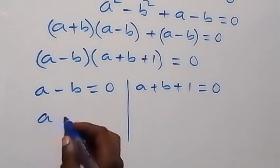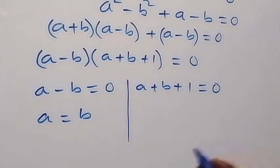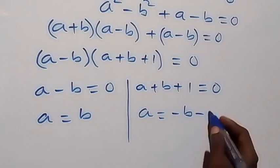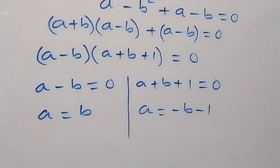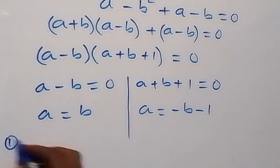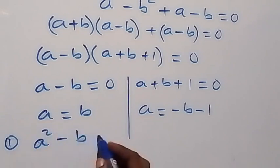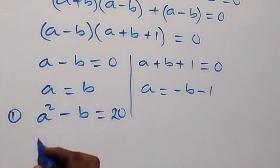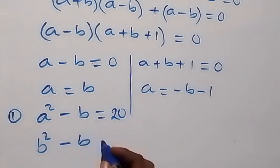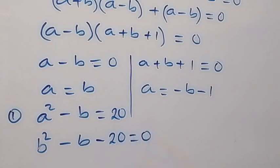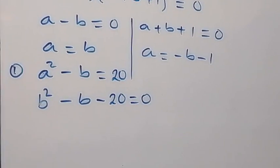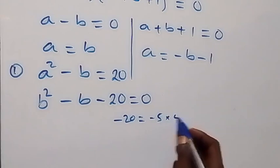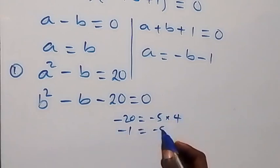From the first case, a equals b — meaning a and b have the same value. From the second case, a equals minus b minus 1. For Case 1, recall from equation 1 that a squared minus b equals 20. Since a equals b, we replace a with b, giving us b squared minus b equals 20, which rearranges to b squared minus b minus 20 equals zero. The product is minus 20, which factors as minus 5 times 4, and the sum is minus 1.